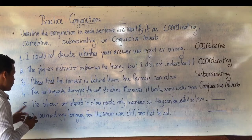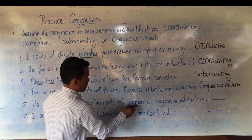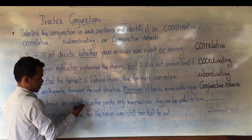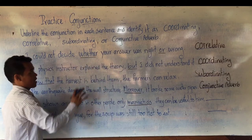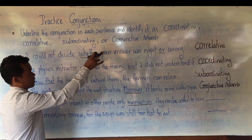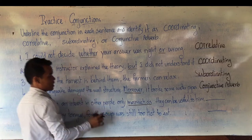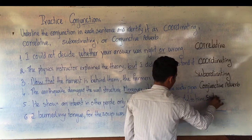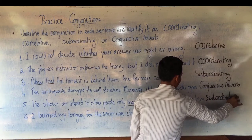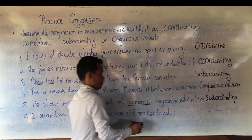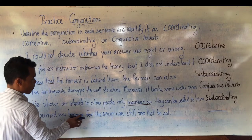Number five: 'He shows an interest in other people only inasmuch as they can be useful to him.' Which is the conjunction? 'Inasmuch as' — not correlative, not coordinating, not conjunctive adverb. That's why it is subordinating conjunction.